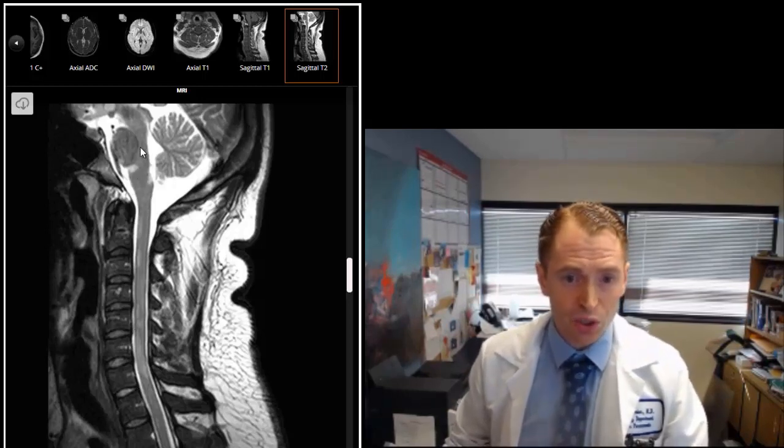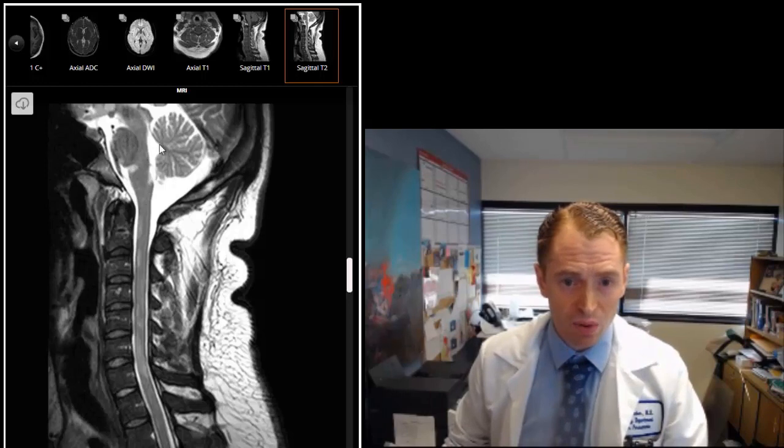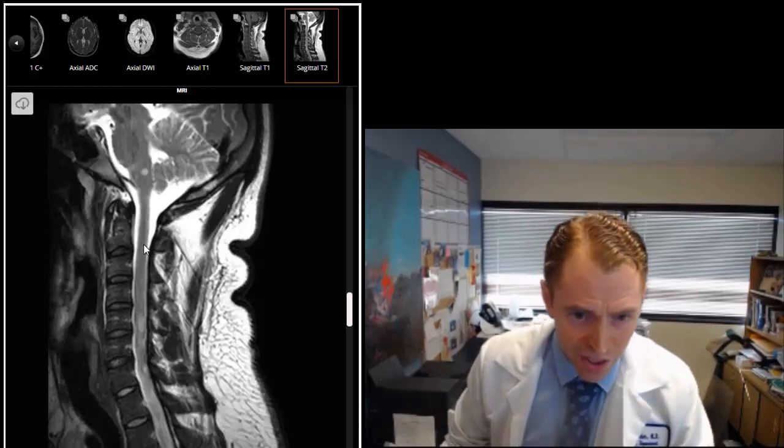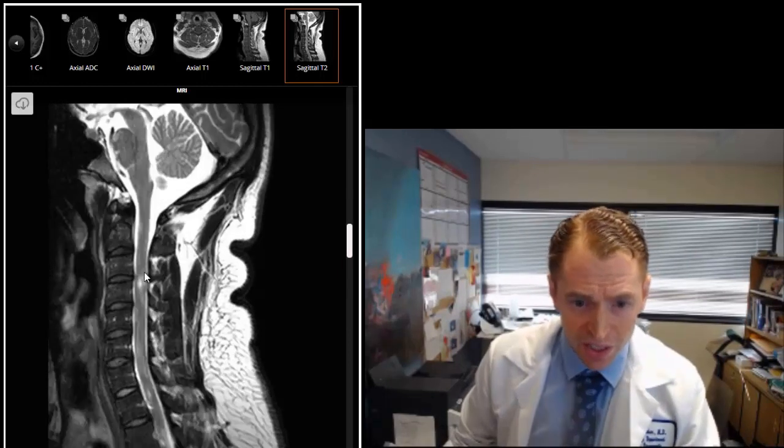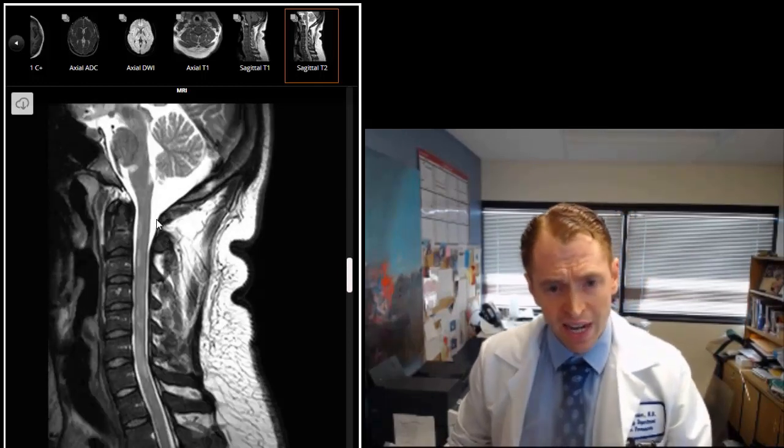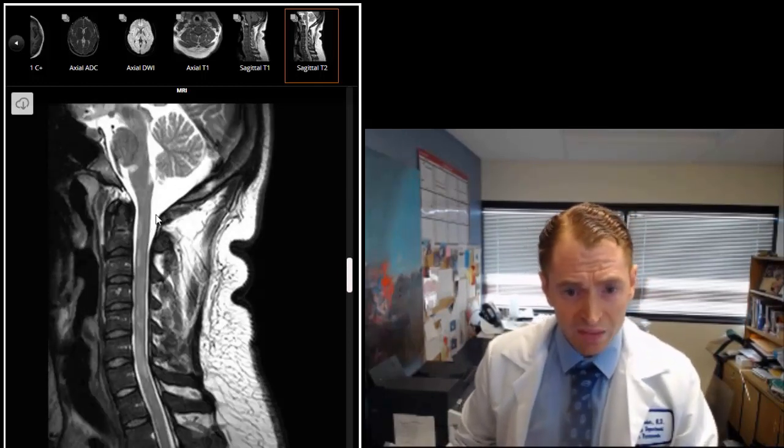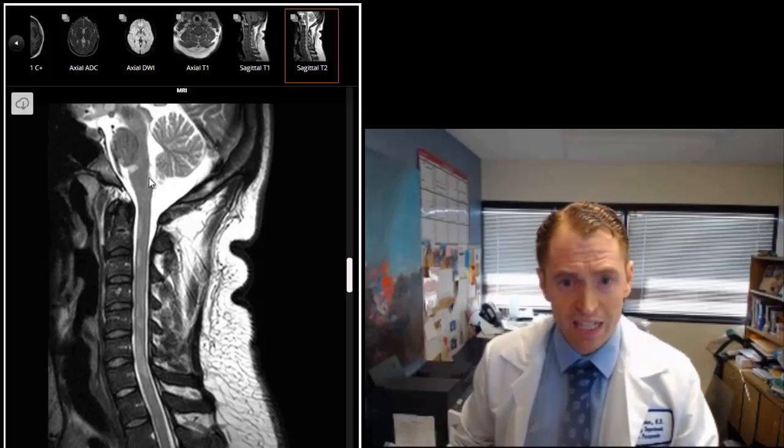You can see the medulla and the pons and the midbrain and the cerebellum. You can see these sort of short lesions that are scattered in different areas. In multiple sclerosis they tend to be mostly towards the back of the cord, but they can also be in different aspects of the cord.